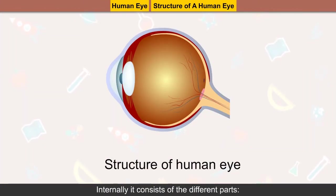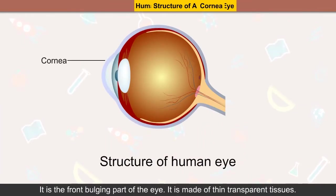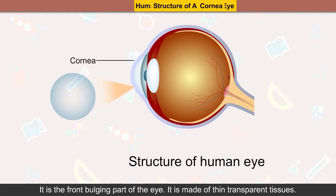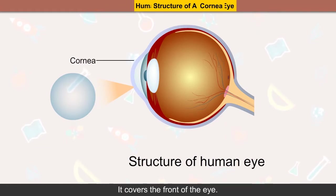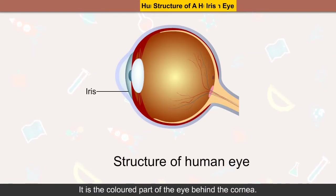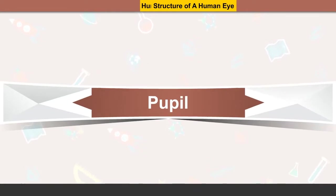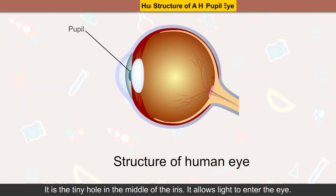Internally it consists of different parts. Cornea: it is the front bulging part of the eye, made of thin transparent tissues that cover the front of the eye. Iris: it is the colored part of the eye behind the cornea; it increases or decreases the size of the pupil to control the amount of light entering the eye. Pupil: it is the tiny hole in the middle of the iris that allows light to enter the eye.